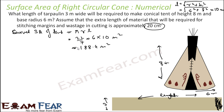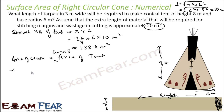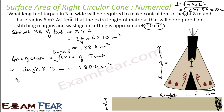The area of cloth equals the curved surface area of the tent. Area of cloth = length × breadth, where breadth is 3 meters and area is 188.4 m². So the length comes out to be 188.4 ÷ 3 = 62.8 meters. That is the length of cloth required.